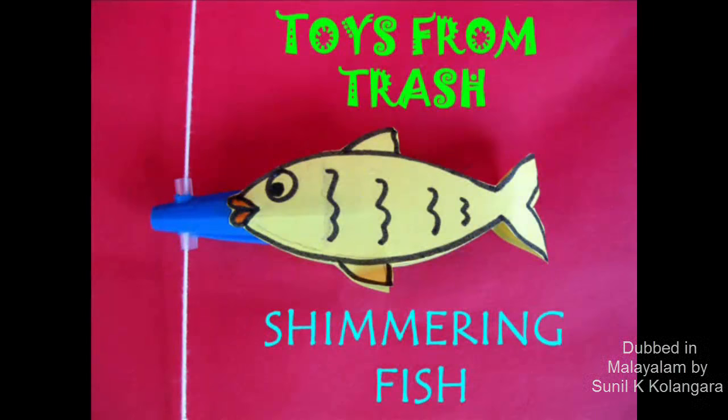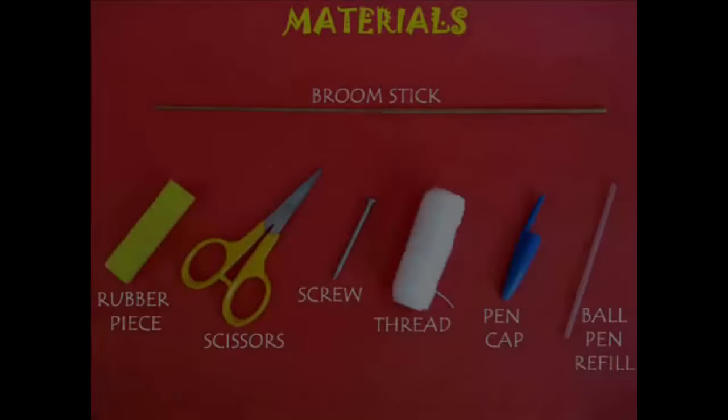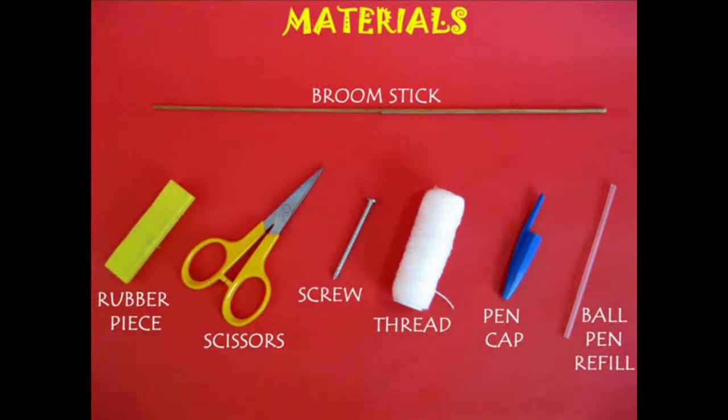Now we have a shimmering fish, a broomstick, a rubber piece, scissors, screw, thread, and a ball pen refill.